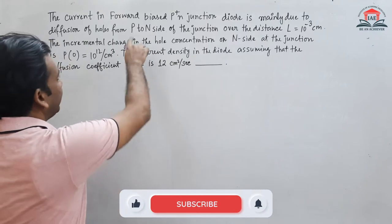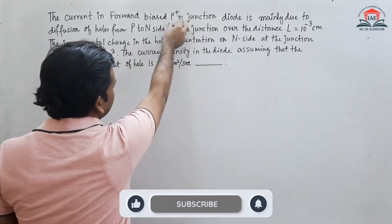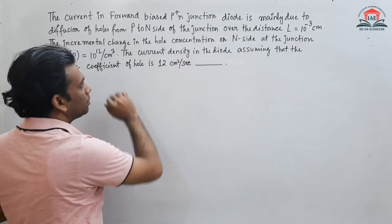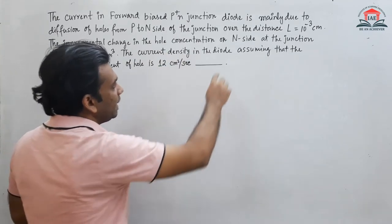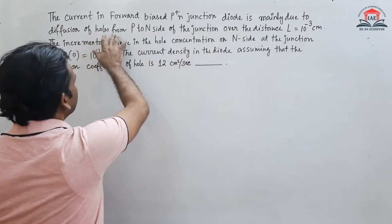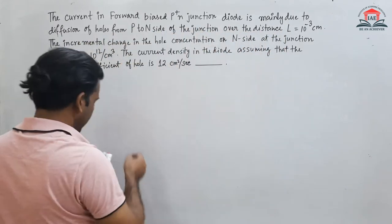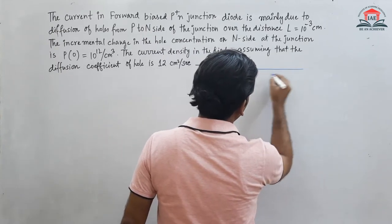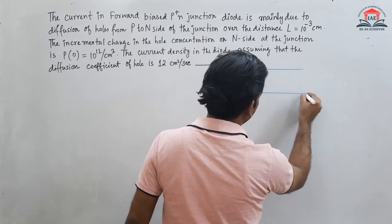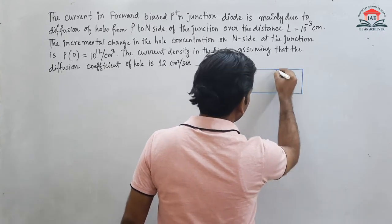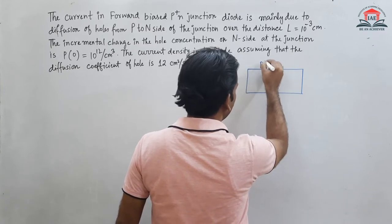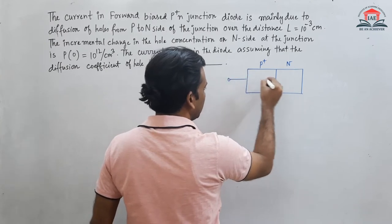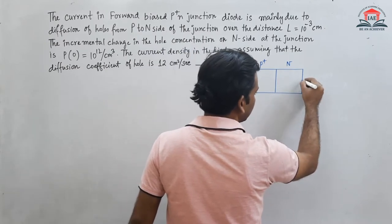The current in a forward bias P+ N junction — P+ N junction means the P region is highly doped and the N region is lightly doped. The current is mainly due to the diffusion of holes from the P to N side. Let us draw a P N junction: the P side is highly doped and N side is moderately doped. This is the P side terminal and this is the N terminal.